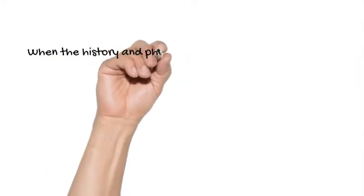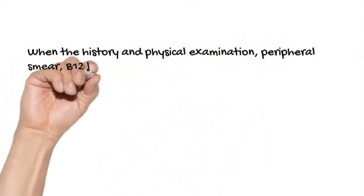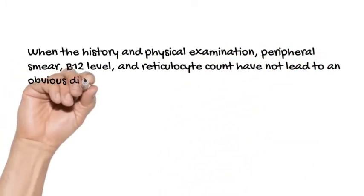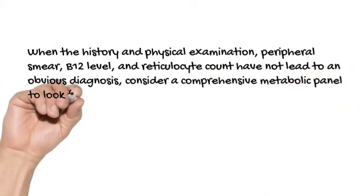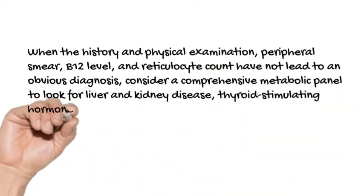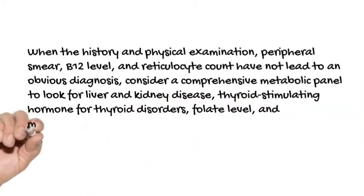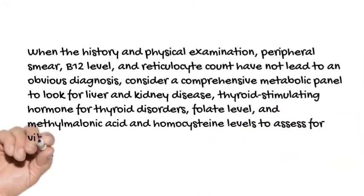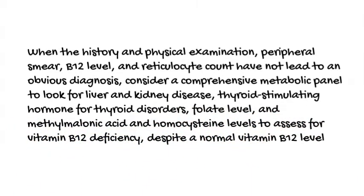When the history and physical examination, peripheral smear, B12 level, and reticulocyte count have not led to an obvious diagnosis, consider a comprehensive metabolic panel to look for liver and kidney disease, thyroid-stimulating hormone for thyroid disorders, folate level, and methylmalonic acid and homocysteine levels to assess for vitamin B12 deficiency despite a normal vitamin B12 level.